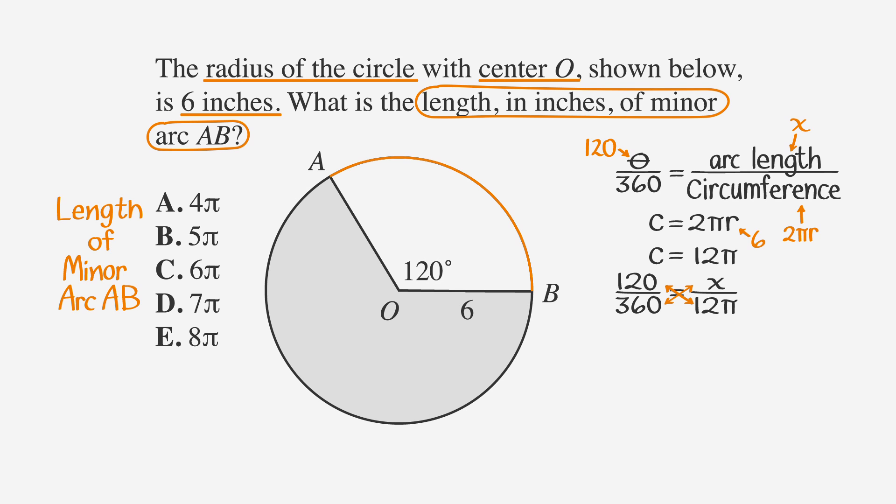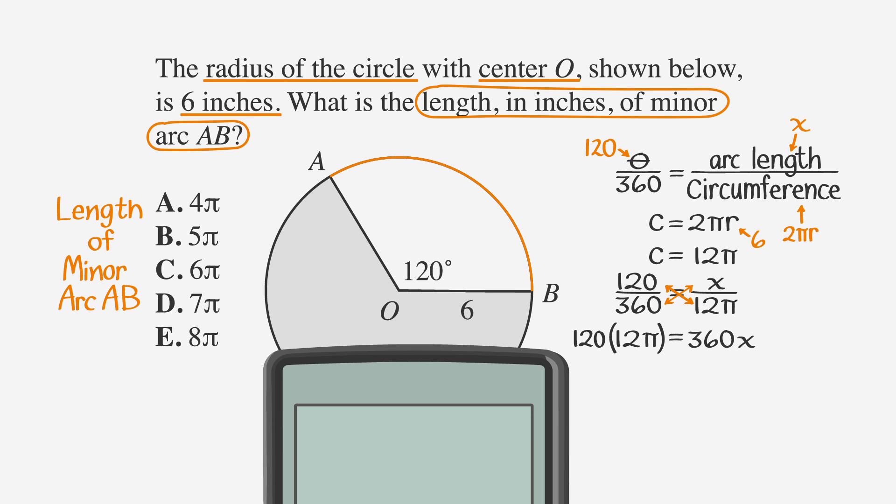We then cross multiply to solve for x. So 120 times 12π equals 360x. We use our calculator to multiply 120 times 12, and we get 1440π equals 360x. Dividing both sides by 360, we get 4π equals x, which is choice A.